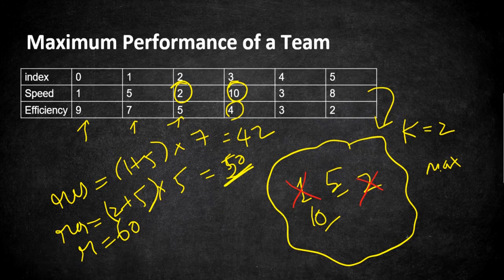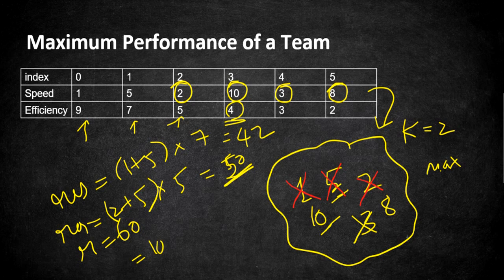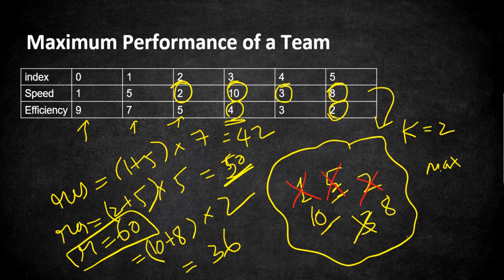Next comes employee number four with speed 3. Pushing 3 into the heap, it is actually the lesser speed compared to the other two employees, so 3 gets pushed away. We are maintaining a higher speed group along with higher efficiencies, and since the next employee always has lesser efficiency, the heap helps maintain employees with both higher speed and higher efficiency for maximum result. Finally, the last employee has speed 8. Pushing 8 in, speed 5 goes out, leaving speeds 10 and 8. Calculating: 10 plus 8 times the lesser efficiency of 2 equals 36, which is less than 60, so we stick with 60.